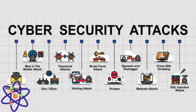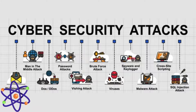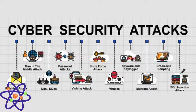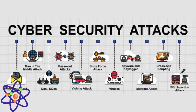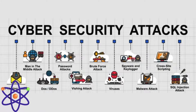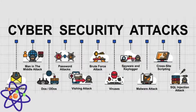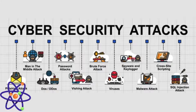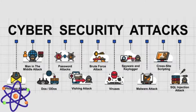Cyber threats come in various forms, each posing unique risks to digital security. Malware is a broad category of malicious software that includes viruses, worms, trojans and ransomware designed to damage, disrupt or gain unauthorized access to computer systems. Phishing involves fraudulent attempts, usually via email, to steal sensitive information like usernames, passwords and credit card details by impersonating a trustworthy entity. Denial of Service and Distributed Denial of Service attacks overwhelm a system's resources, making it unavailable to its intended users.